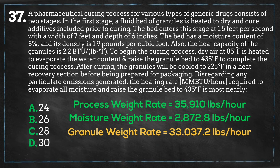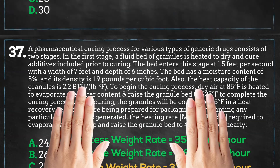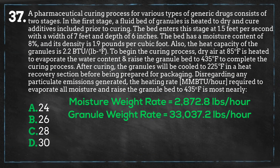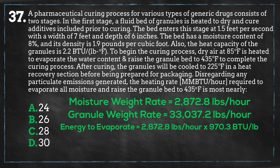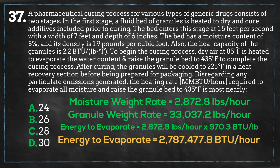Now that we have our various rates, we can solve for the energy needed to achieve both goals. For evaporating the moisture, using the latent heat of vaporization of 970.3 BTU per pound, we multiply this by the moisture rate and we get 2,787,000 BTU per hour as the energy required to dry the bed.